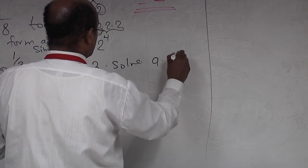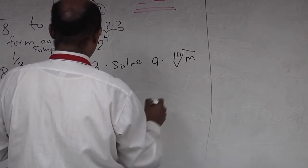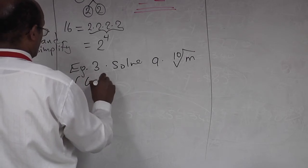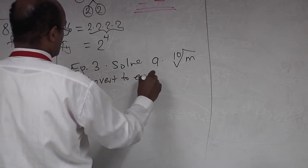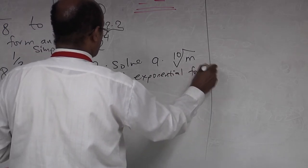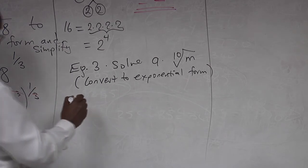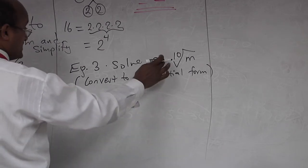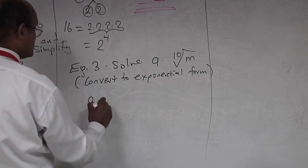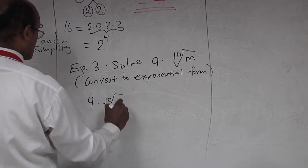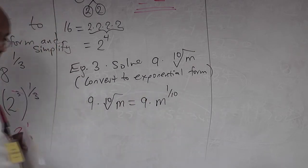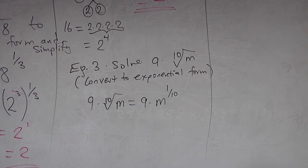Now consider 9 times the cube root of m — convert to exponential form. Since 9 is not inside the radical, this is the same as 9 times m to the power of 1 over 3. That's the final answer.